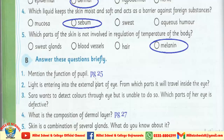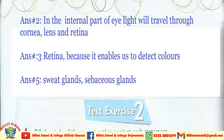Dear students، اب short questions دیکھیں۔ Mention the function of pupil — اس کا answer page number 25 پر ہے۔ Fourth one: What is the composition of the dermal layer? — اس کا answer page number 27 پر دیکھیں۔ Question number 2, 3, and 5 کے answers آپ کو screen پر دکھا دیے گئے ہیں — آپ نے answer number 2, 3, and 5 اچھے سے learn کرنے ہیں۔ Students، اب آپ نے text exercise number 1 and 2 اچھے طریقے سے learn کرنی ہے۔